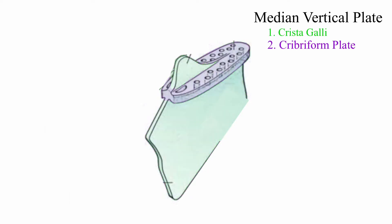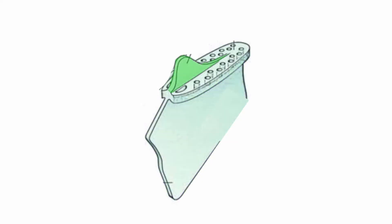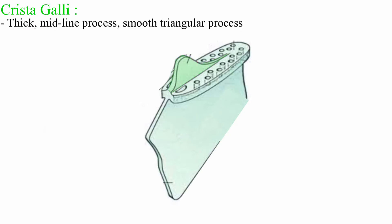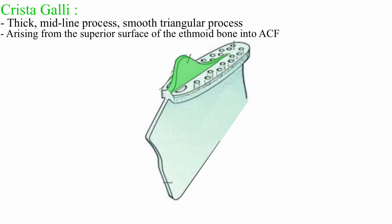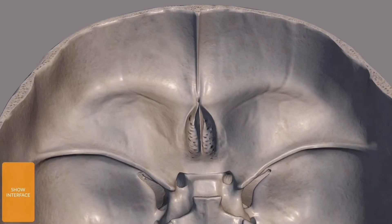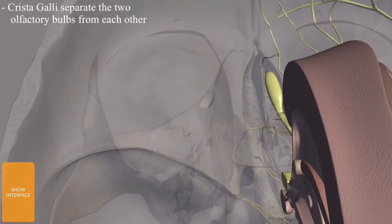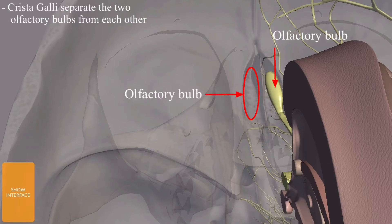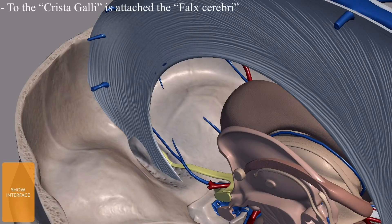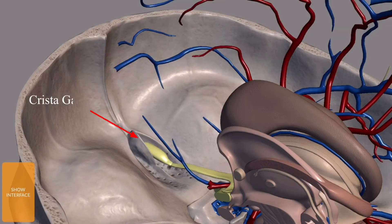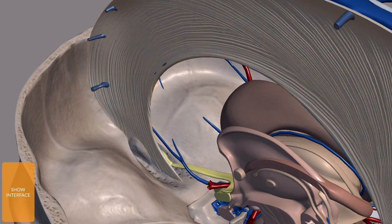The crista gallii is a thick mid-line smooth triangular process arising from the superior surface of the ethmoid bone into the anterior cranial fossa. In this model, this is the crista gallii. The crista gallii separates the two olfactory bulbs, as you can see in this diagram. This is one olfactory bulb, and there is another olfactory bulb over here, which is missing in this diagram. Between these two olfactory bulbs lies the crista gallii, and to the crista gallii is attached the falx cerebri.